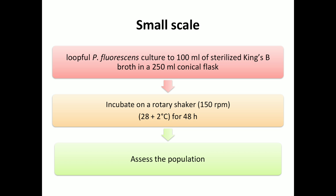For small scale multiplication of Pseudomonas fluorescens: first, transfer a loopful culture of Pseudomonas fluorescens into 200 ml of sterilized King's B broth in a 250 ml conical flask. For proper shaking, nearly half the amount of media is poured in the flask. Then incubate it on a rotary shaker at 150 rpm and 28 ± 2°C for 48 hours.